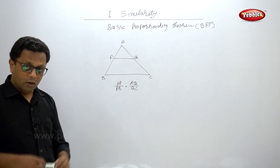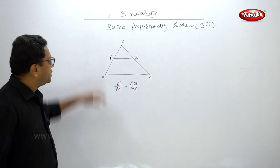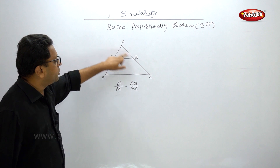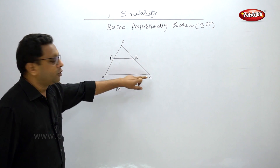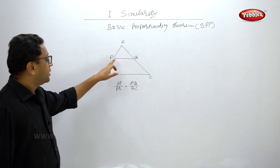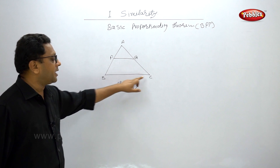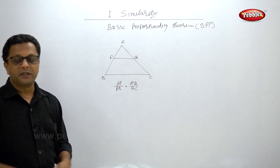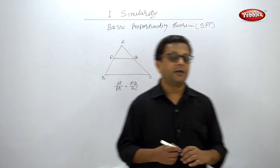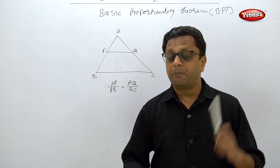The converse is also true — that means if AP upon PB is equal to AQ upon QC, then PQ must be parallel to BC. This is the Basic Proportionality Theorem.